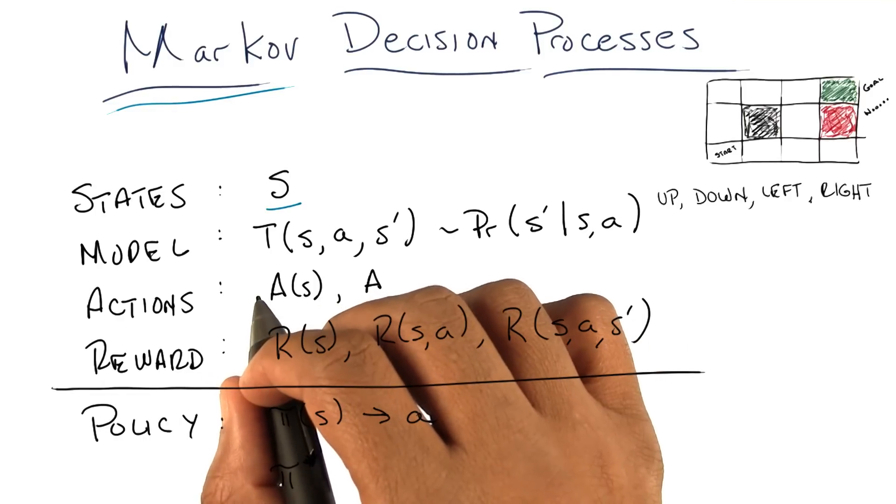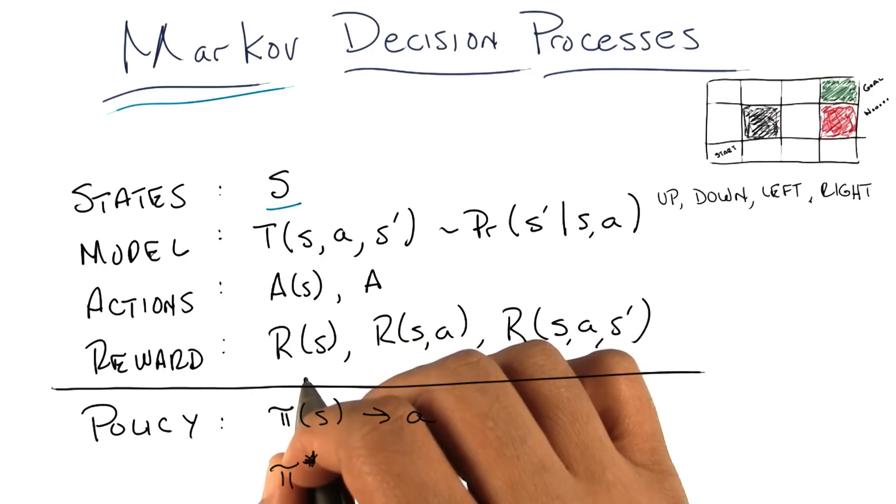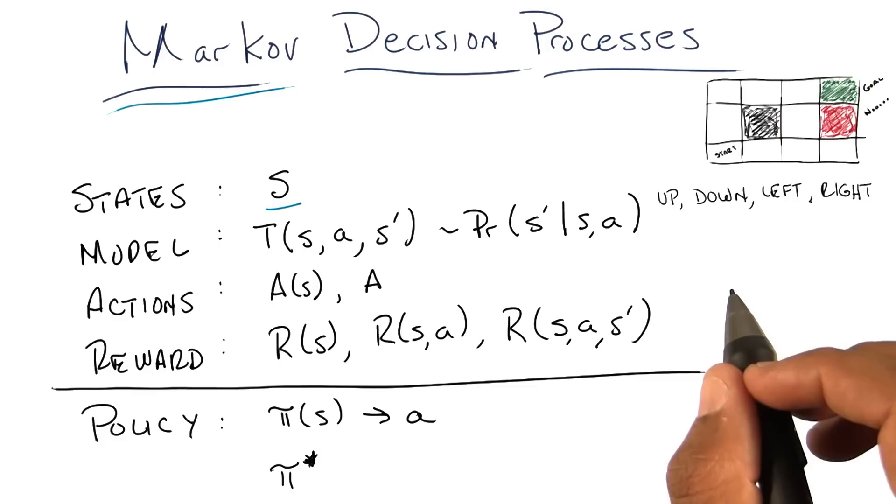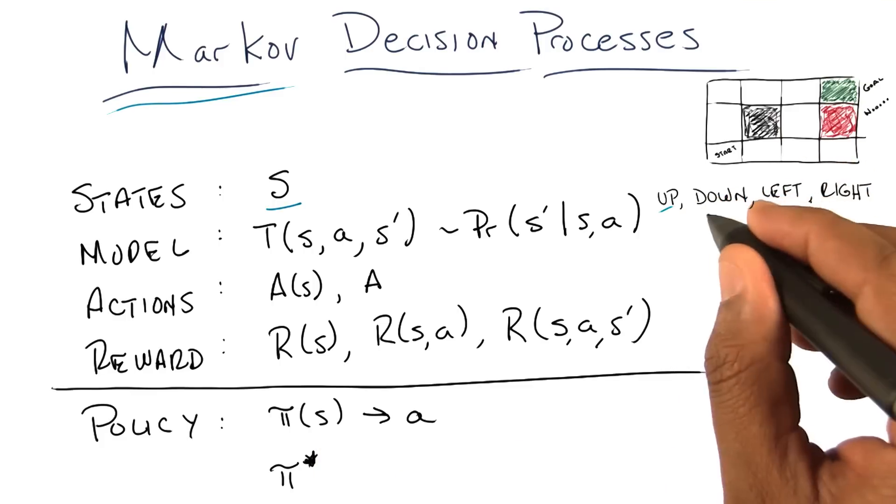The third part of our model are actions. Actions are the things that you can do in a particular state. So what would the actions be in this world? Well, the four different decisions I could make were up, down, left, and right.